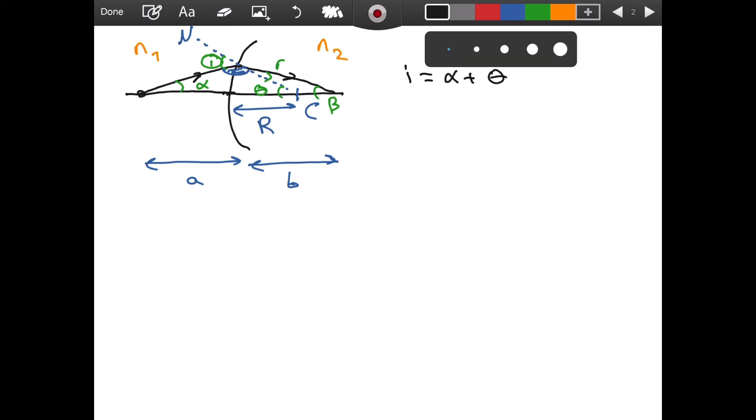And then, similarly, we can express theta as well. This is I. Let's do a similar thing for theta. For theta, I can say it is going to be using the same logic, r plus beta. And if I solve for r in this equation, I am going to get r is equal to theta minus beta. Now, this is great, but I want to define a height. I am going to define this height between the principal axis and the point where the light touches the refractive surface, h.